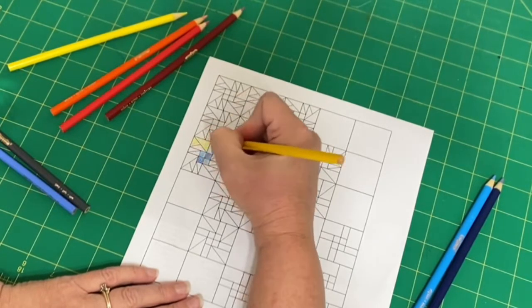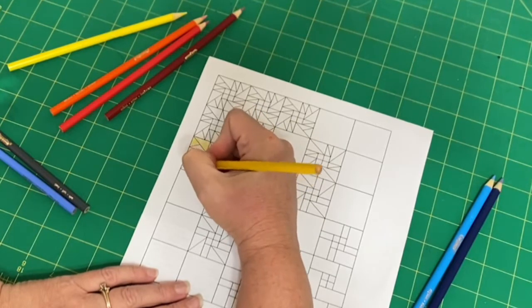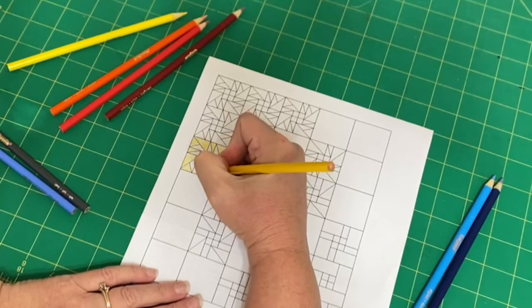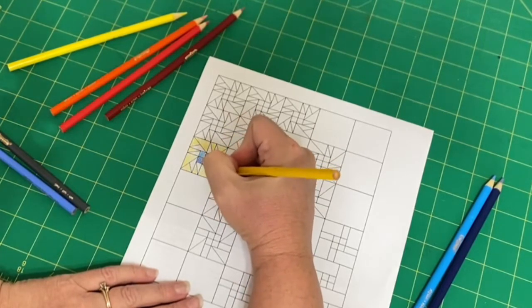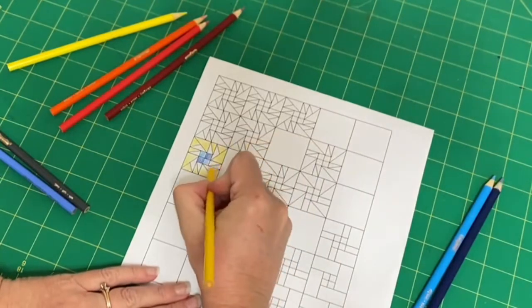So I know with this pattern that all these outer triangles are part of the background colors are part of the background color in this quilt. So I will put those in in that color.